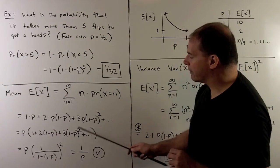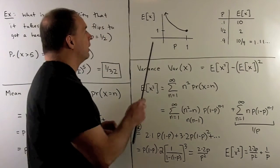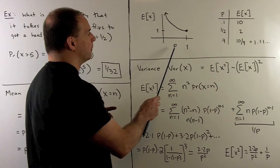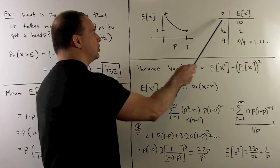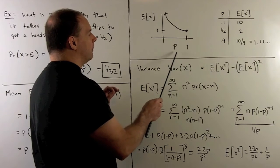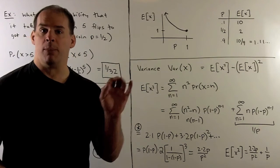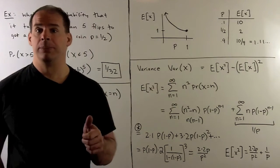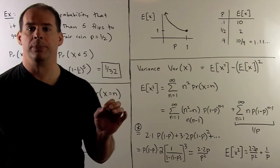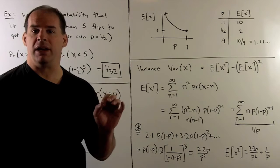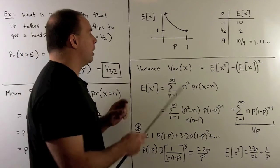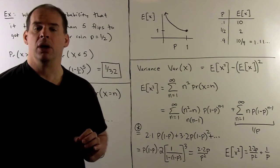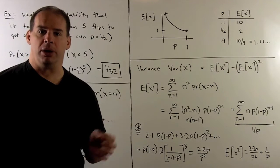Now let's look at the graph of the mean or expected value against P, the probability of getting heads. When P is close to 1 — almost certain — we expect only one flip. On the other hand, when P is very small and near 0, the expected value is very high, going to infinity, meaning we need more and more flips as that probability decreases.